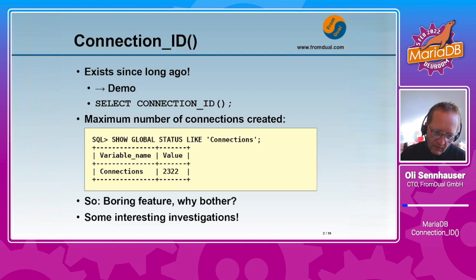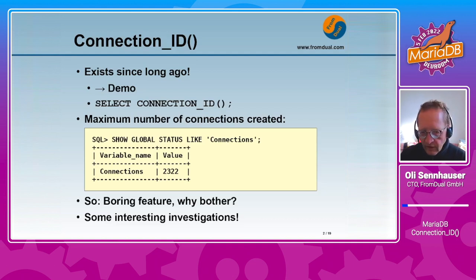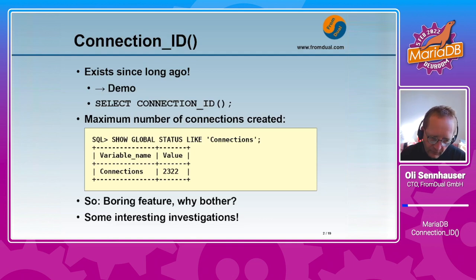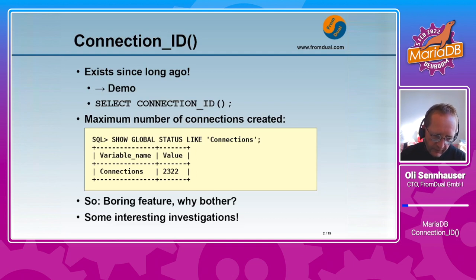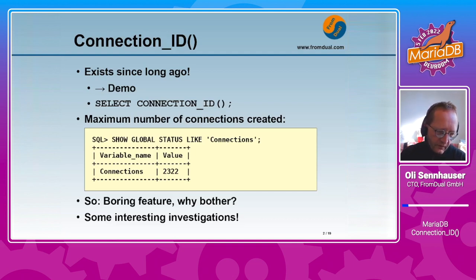The maximum number of connections which were created since database startup you can see easily with the command SHOW GLOBAL STATUS LIKE 'connections', and you see here in this case we had already 2322 connections since database startup.